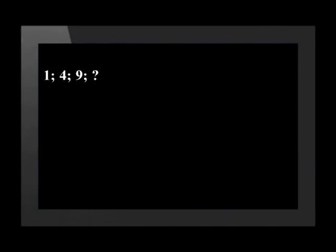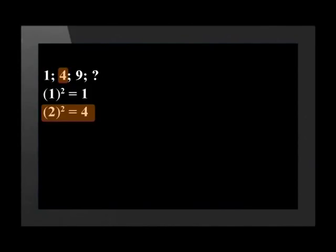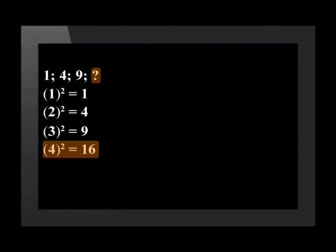Look at the sequence 1, 4, 9. Let's figure out what the next number will be. This number pattern is a sequence of squared numbers. Term 1 is 1 squared, which is 1. Term 2 is 2 squared, which is 4. Term 3 is 3 squared, which is 9. So the fourth term will be 4 squared, which is 16. Each time we squared n to give us the next number in the pattern. This is an example of a quadratic sequence with Tn equal to n squared.